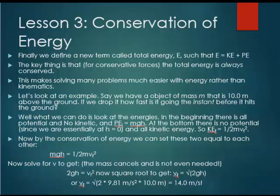So what I'd like to do now is show you an example that proves this. Say we have an object of mass m that is 10 meters above the ground. If we drop it, how fast is it going the instant before it hits the ground? Now we could solve this using our kinematic equations, but it takes a little while longer. So what we'll do is look at this in terms of energies. Remember, the total energy is kinetic plus potential, or 1 half mv squared plus mgh. So in the beginning, there was all potential, no kinetic. It's not moving, there's no velocity, there's no kinetic. So the potential energy initial is mgh. At the bottom, there's no potential since we are basically at h equals zero. And by the way, at the bottom I mean the instant before it hits the ground, not once it stopped moving.